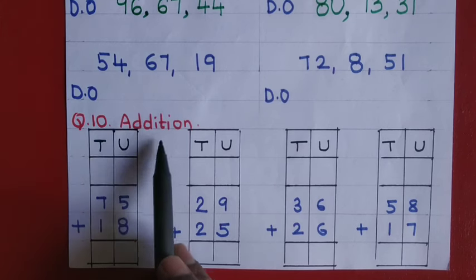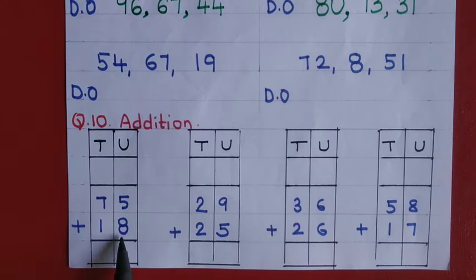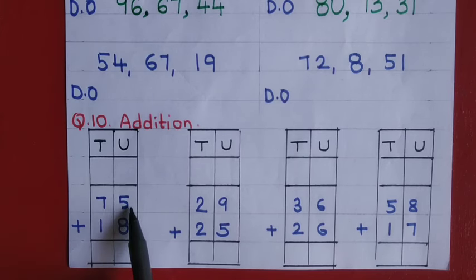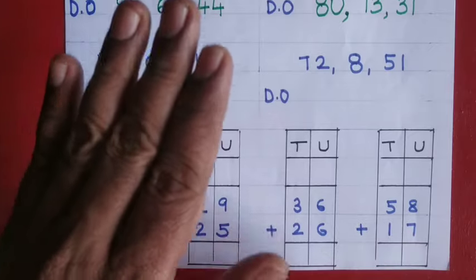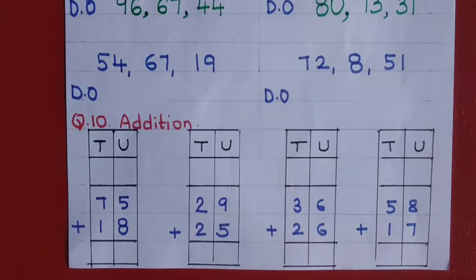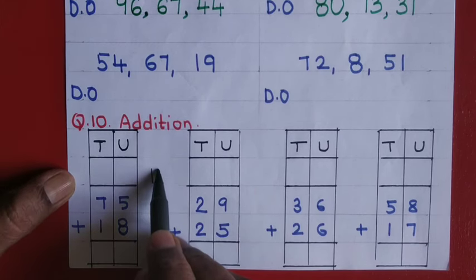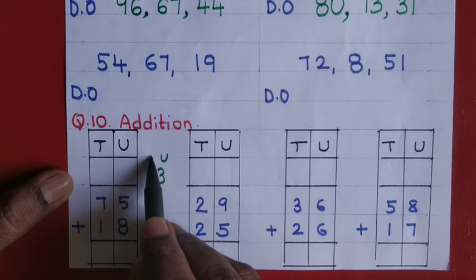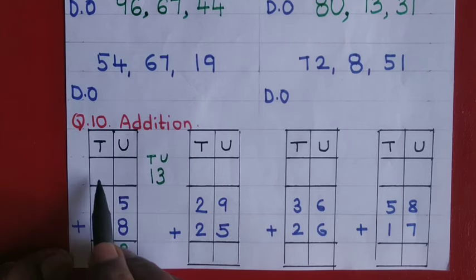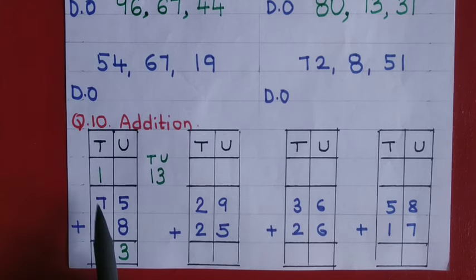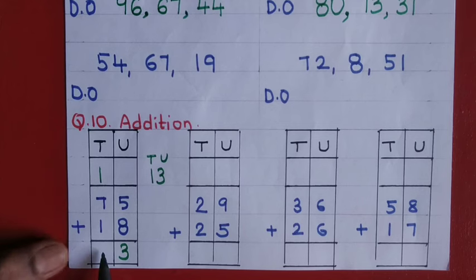Question number ten: addition. Seventy five plus eighteen. Always begin from the unit place. Keep five in your mind and count eight fingers forward: six, seven, eight, nine, ten, eleven, twelve, thirteen. Write thirteen. That gives three units — write three here — and one ten to carry over. Then one plus seven is eight, eight plus one is nine. The answer is ninety three.